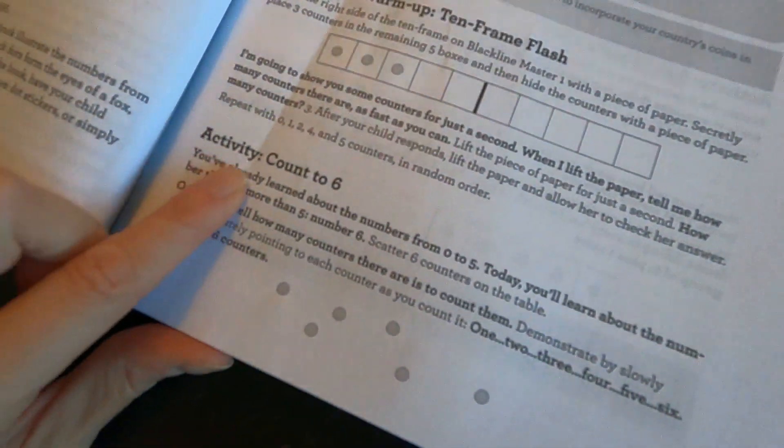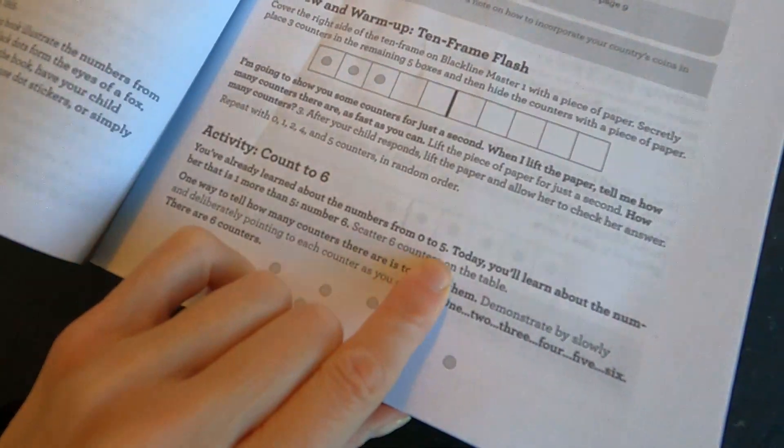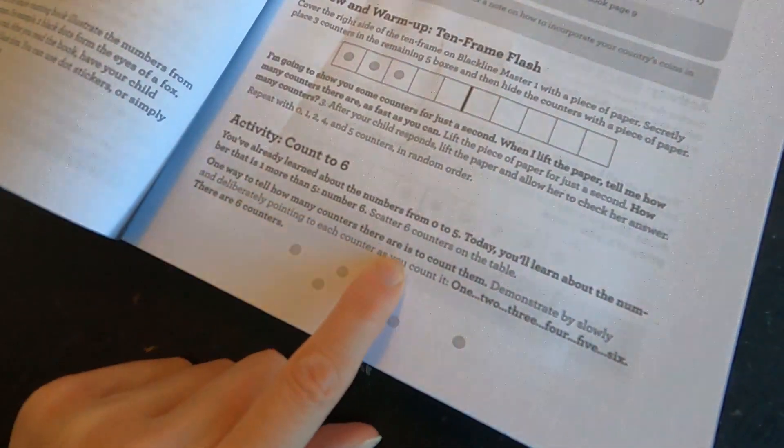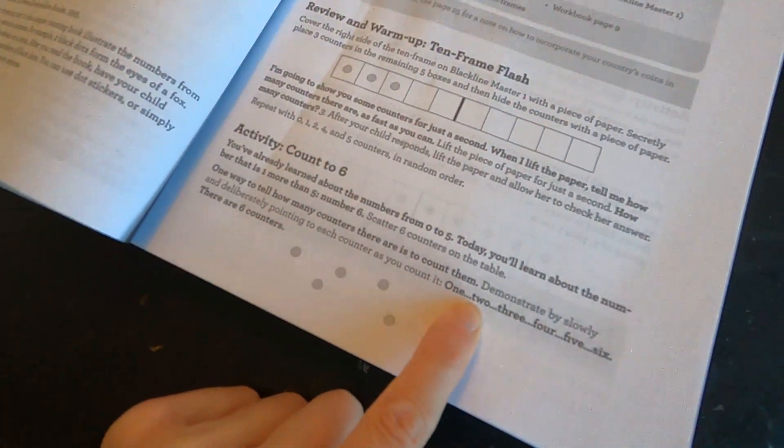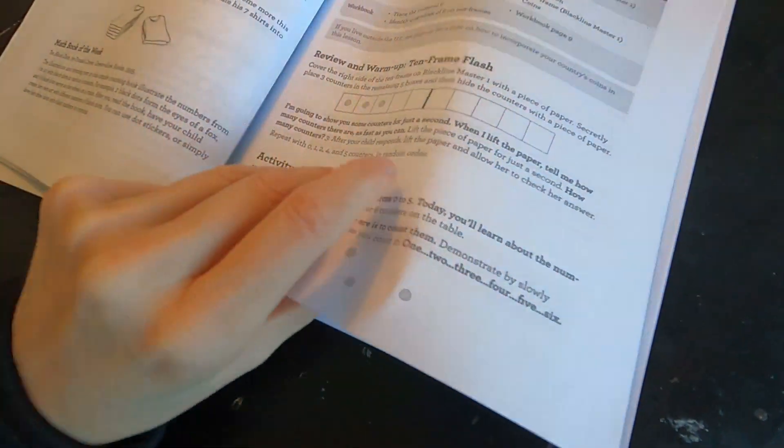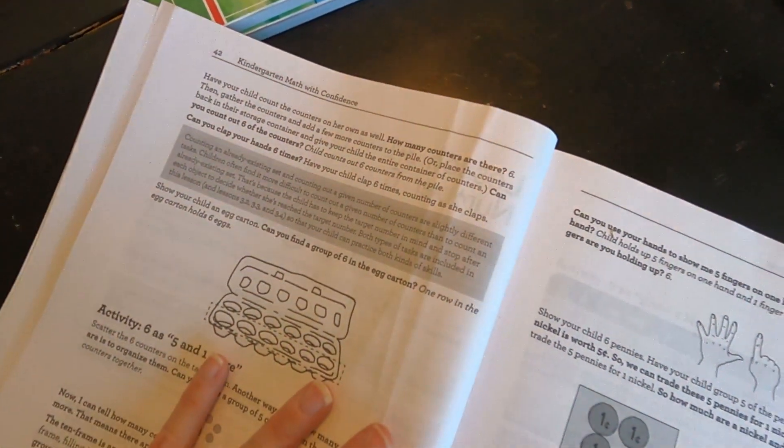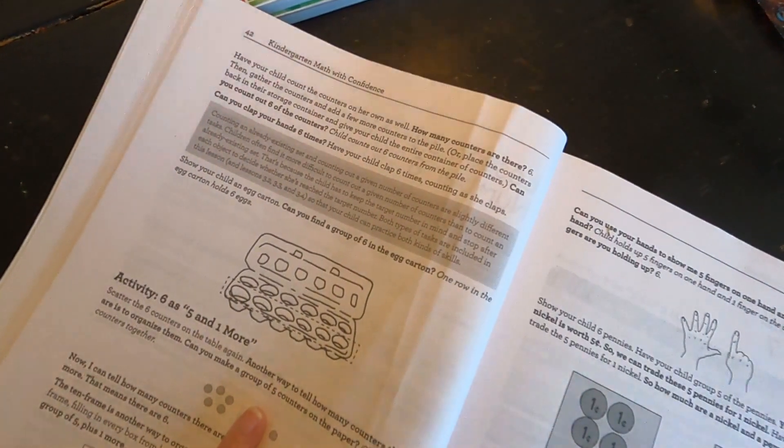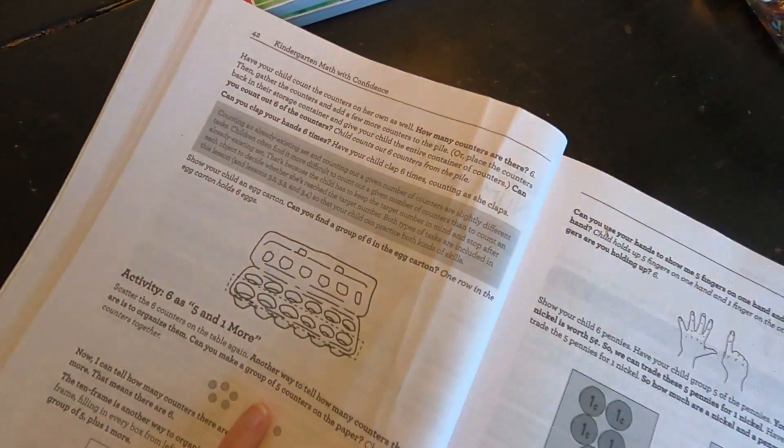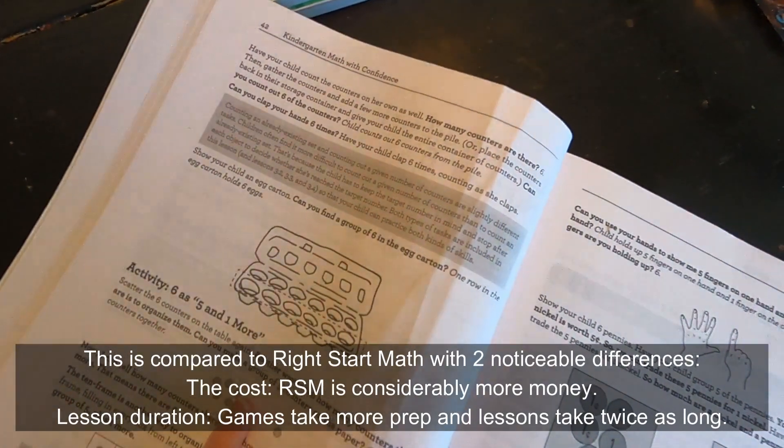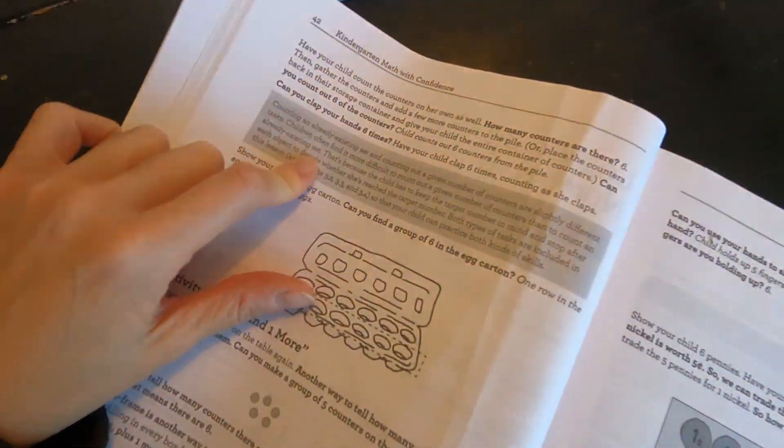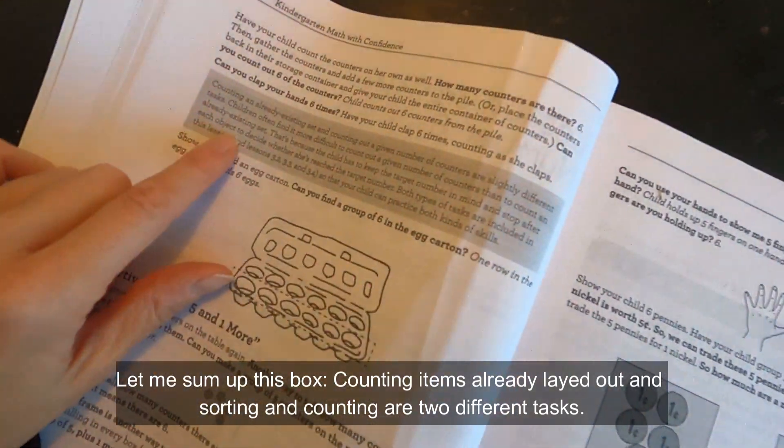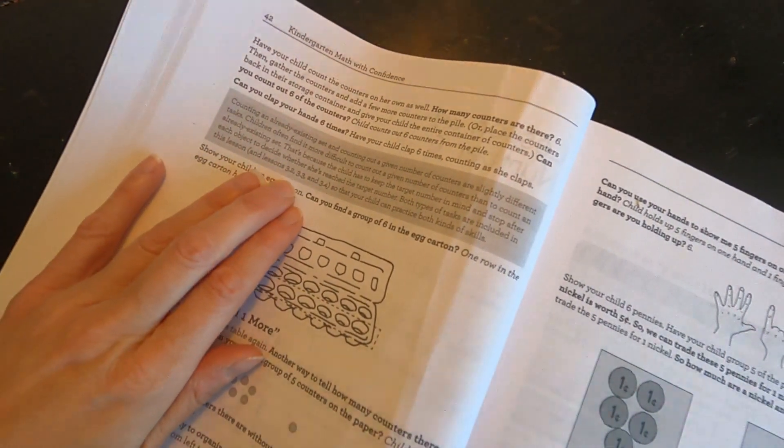Now activity: count to six. You've already learned the numbers from zero to five. Today you're gonna learn about the number that is one more than five - number six. So scatter six counters on the table. One way to tell how many counters there are is to count them. Demonstrate by slowly and deliberately pointing at each counter as you count: one, two, three, four, five, six. There are six counters. Have your child count the counters on her own as well. How many counters are there? Six. Then gather up the counters and add a few more counters to the pile, or place the counters back in the storage container and give your child the entire container of counters. Can you count out six of the counters? Then they'll count out six. Can you clap your hands six times? They clap six times. So now these boxes right here tell you why you're doing what you're doing.